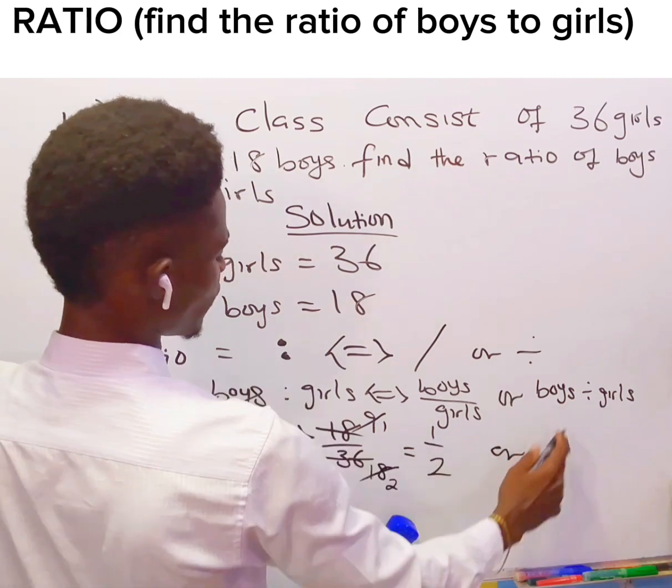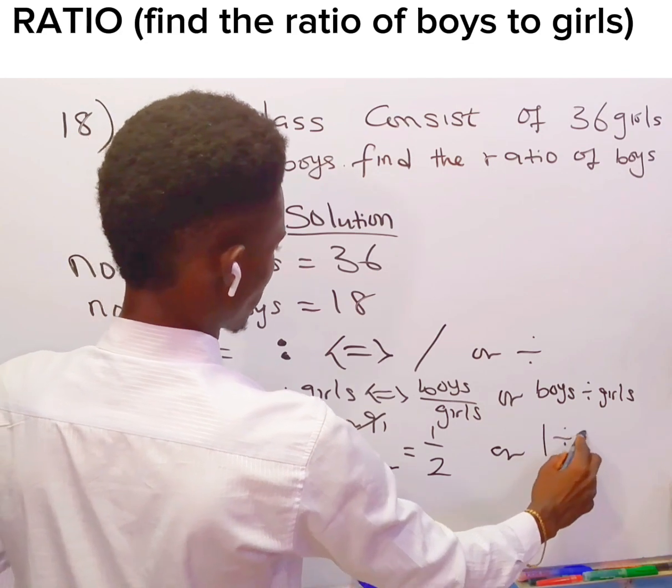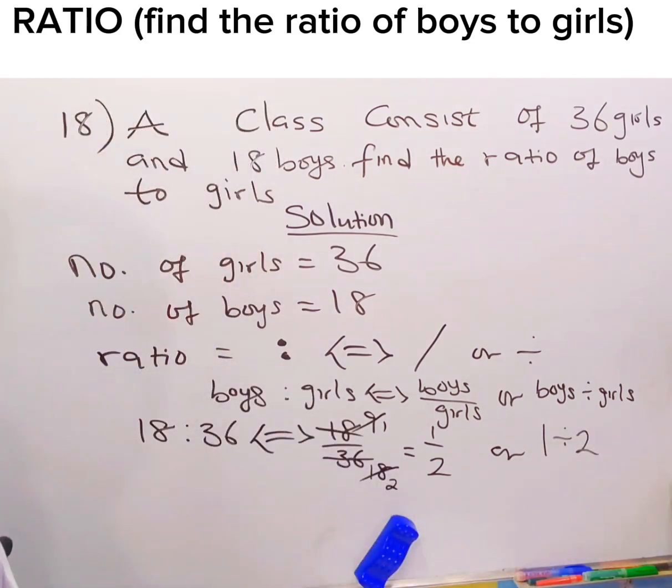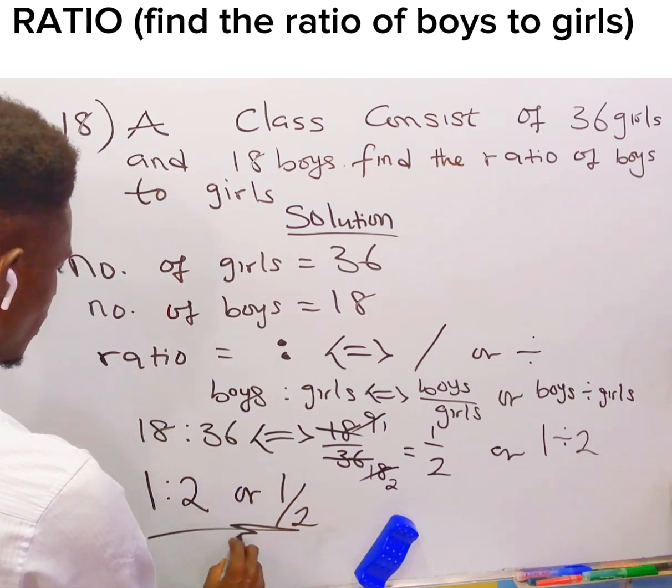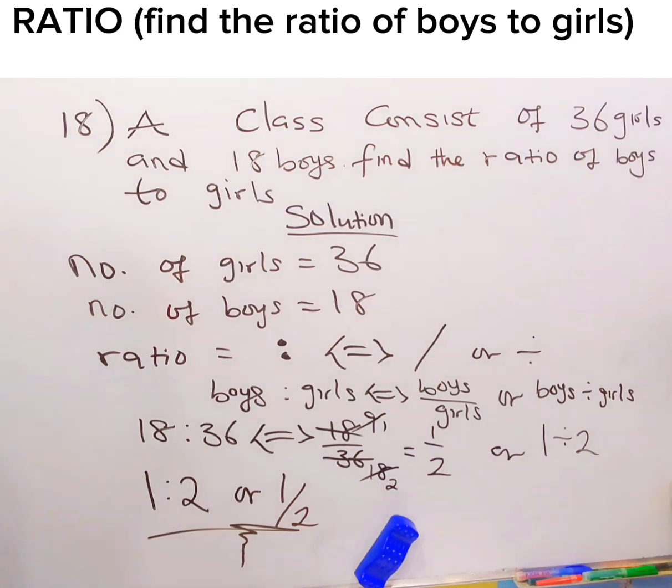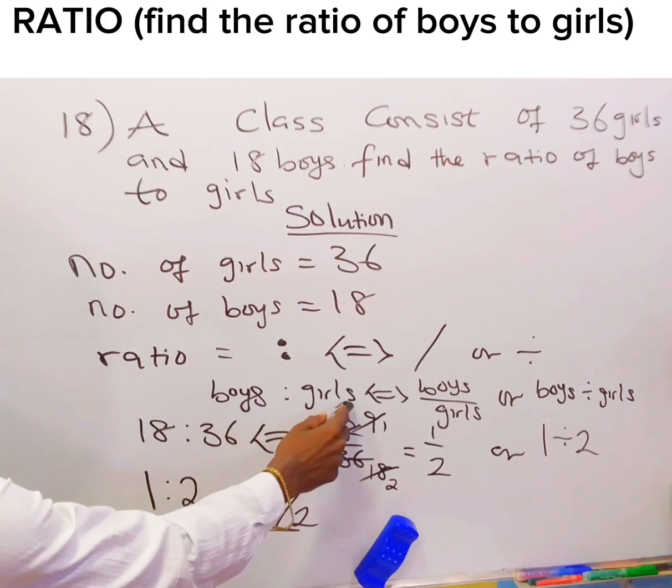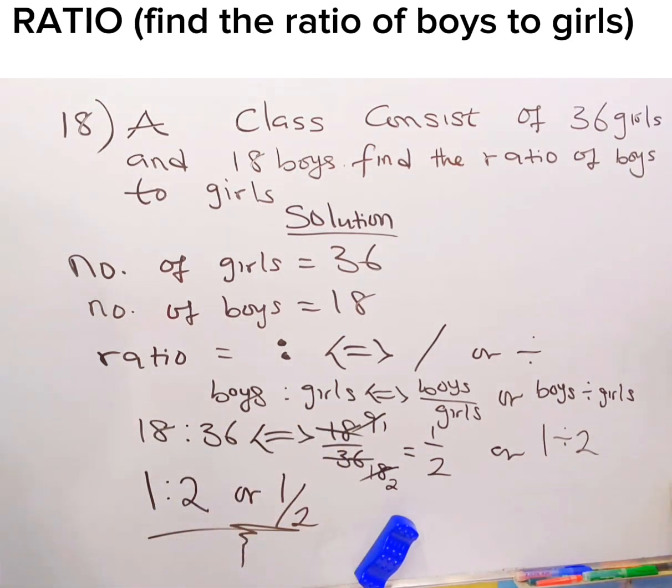Or using the division, we'll say 1 divided by 2. However, the proper way of writing this is 1 ratio 2, or 1 over 2. Which means the ratio of boys to girls is 1 ratio 2, or 1 over 2.